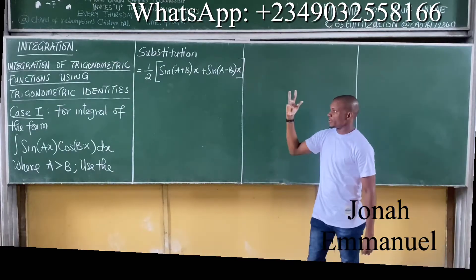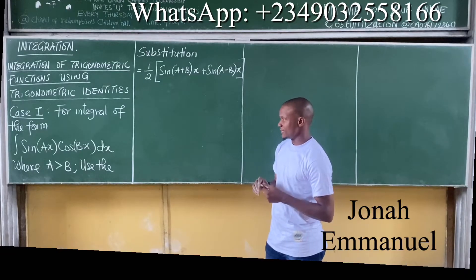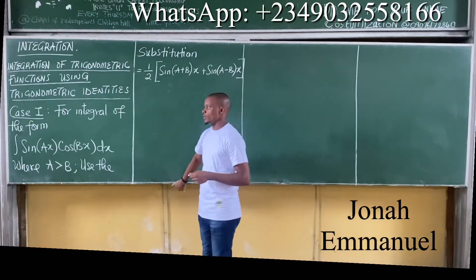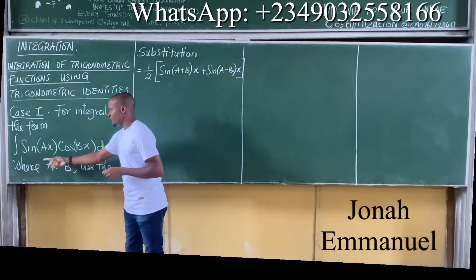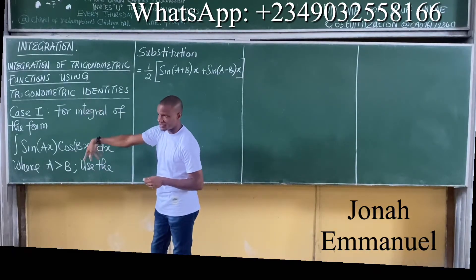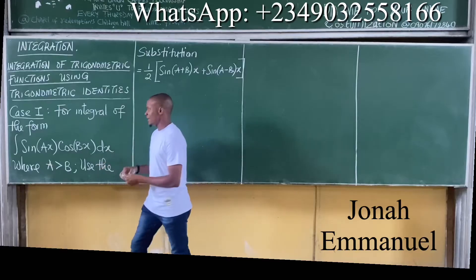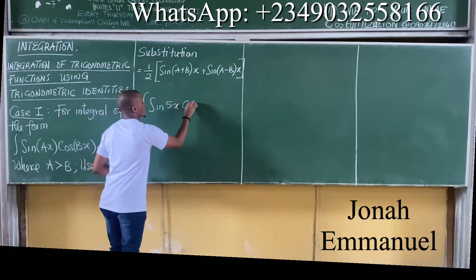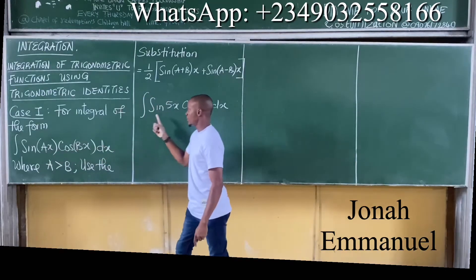Let's consider the integration of trigonometric functions using trigonometric identities. This topic has about four cases. Let's look at each case. Case one: you have to integrate a function of the form sin(ax)cos(bx)dx. The condition for this case is that the first number a must be greater than b. For instance, the integral of sin(5x)cos(3x)dx fits this case, since 5 is greater than 3.